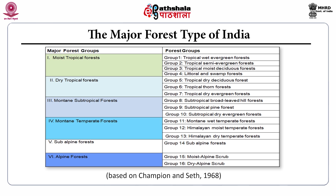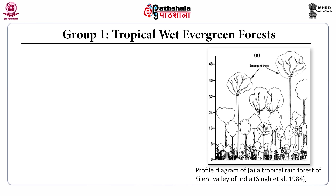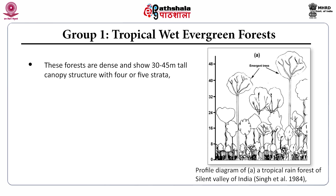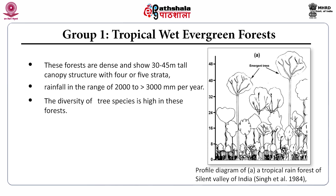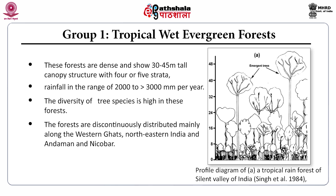Group 1, the tropical wet evergreen forests, are dense and show 30 to 45 meter tall canopy structure with 4 or 5 strata. Rainfall ranges from 2000 to greater than 3000 millimeters per year. Diversity of tree species is high. These forests are discontinuously distributed mainly along the Western Ghats, northeastern India, and the Andaman and Nicobar.